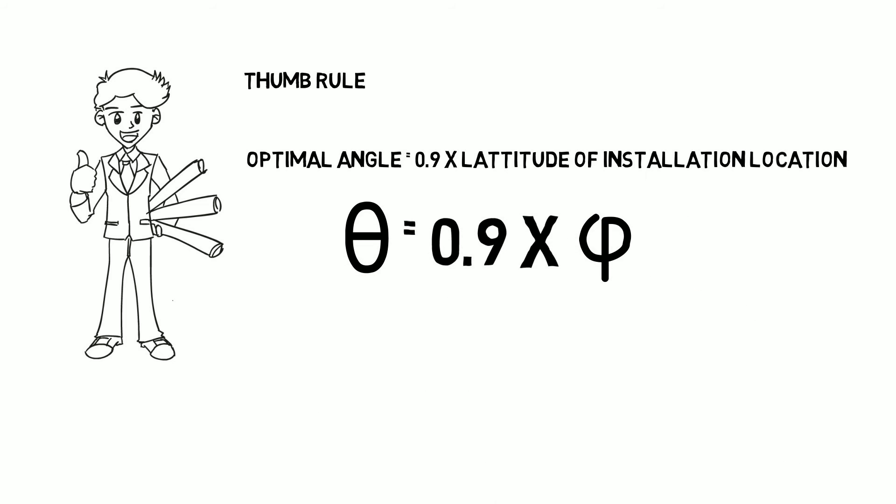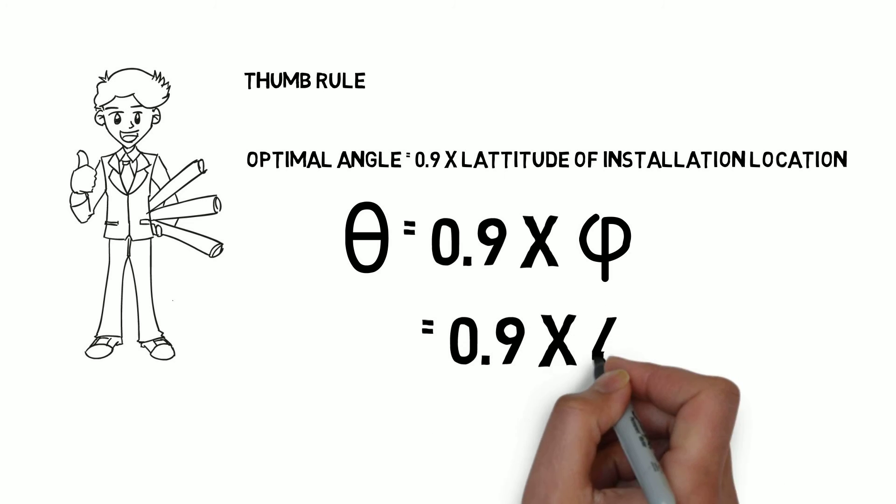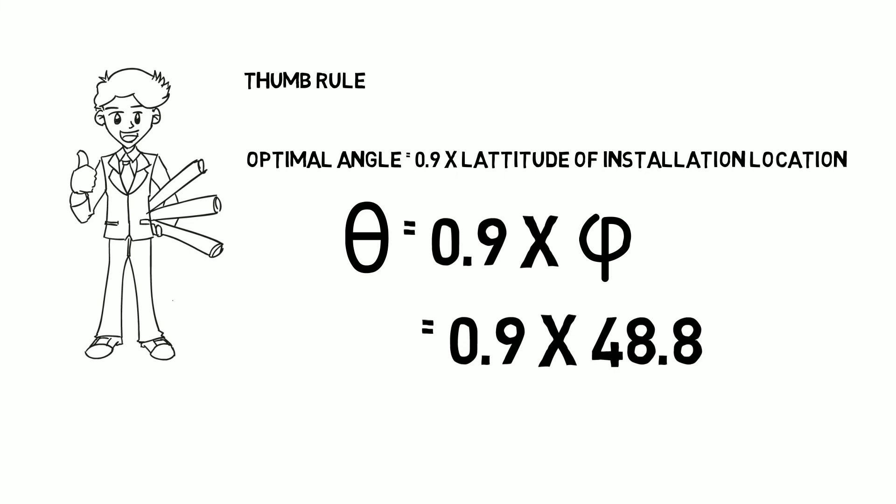So for example, if one is to install solar panels in Paris, the latitude of Paris can be found on the internet, and the latitude is 48.8 degrees north. Therefore, the optimal angle from the thumb rule will be 0.9 times 48.8, which would be about 44 degrees.